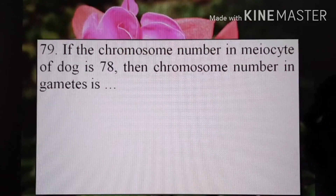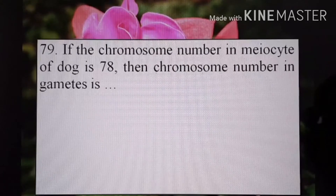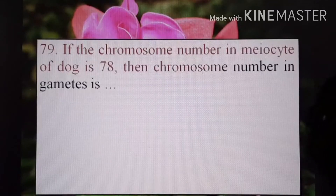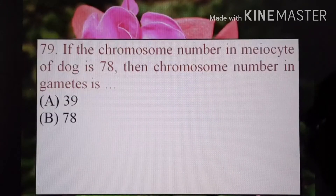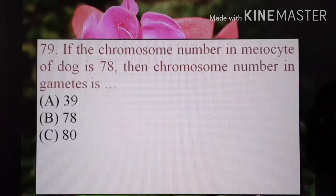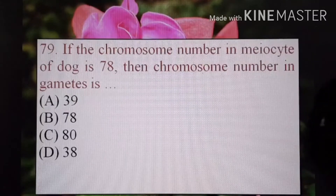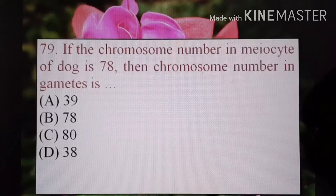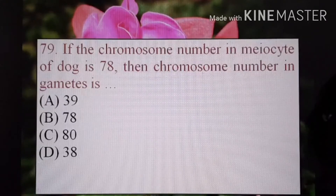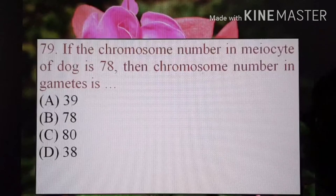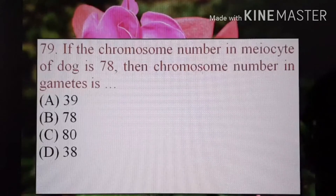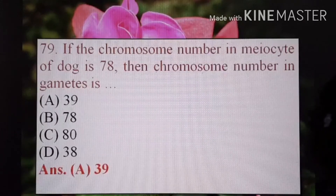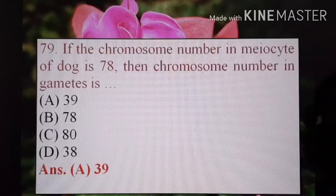Let's move forward. If the chromosome number in the meiocyte of dog is 78, then chromosome number in gametes is — A) 39, B) 78, C) 80, or D) 38. Meiocyte chromosomes are given, so the number in gametes will be half: 78 divided by 2. The correct option is A) 39.